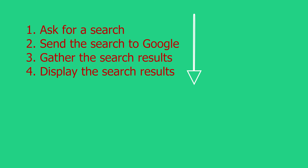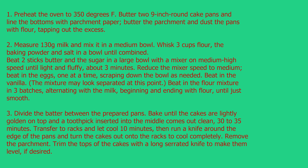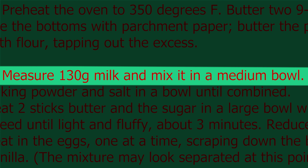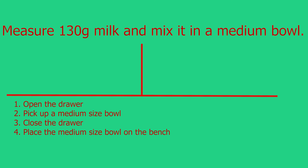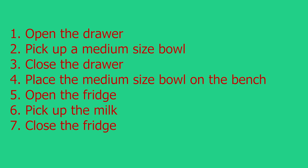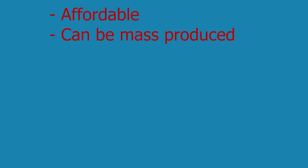Essentially, code is just a list of instructions. These instructions are like a method for baking a cake, just more restricted in how you write them, with the steps being more drawn out. For example, instead of 'measure 130g of milk and mix it in a medium bowl,' you'd break it into many steps: open the drawer, pick up a medium sized bowl, close the drawer, place it on the bench, open the fridge, pick up the milk, close the fridge — and you might even have to break it down further, since the computer probably doesn't know what a fridge or milk is. So you would have to write code to tell it. And computers can't just read code; they need a solution that's affordable, can be mass produced, and is reliable.